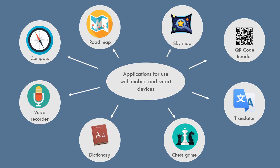The following shows some examples of application software for mobile and smart devices. Compass: it's used to find the orientation. Route map: it directs using GPS, finds distance between two places, and identifies traffic.